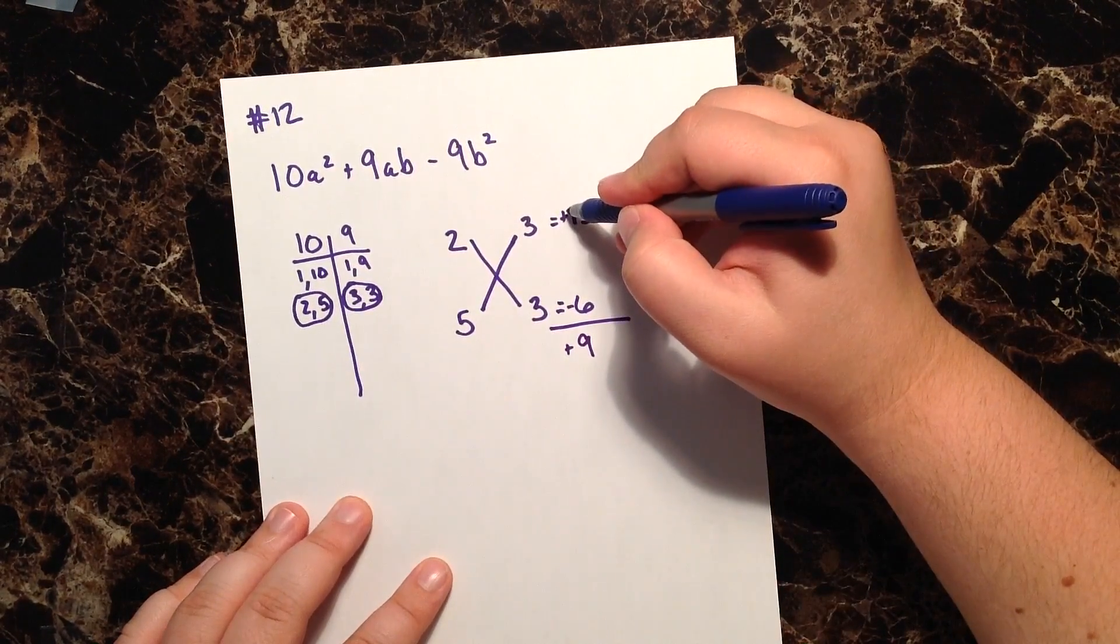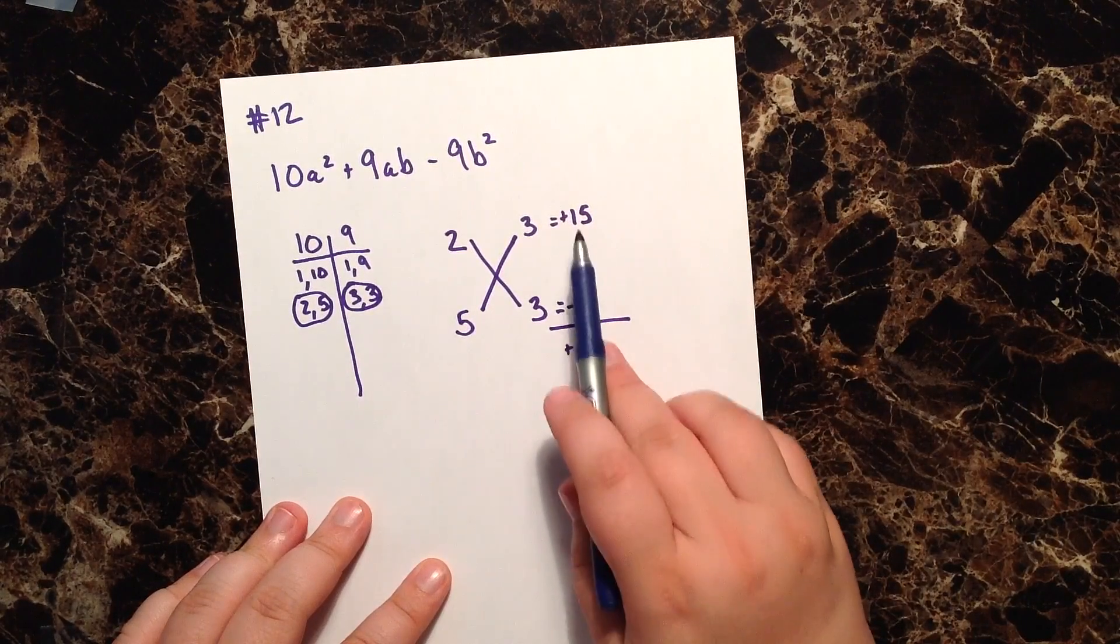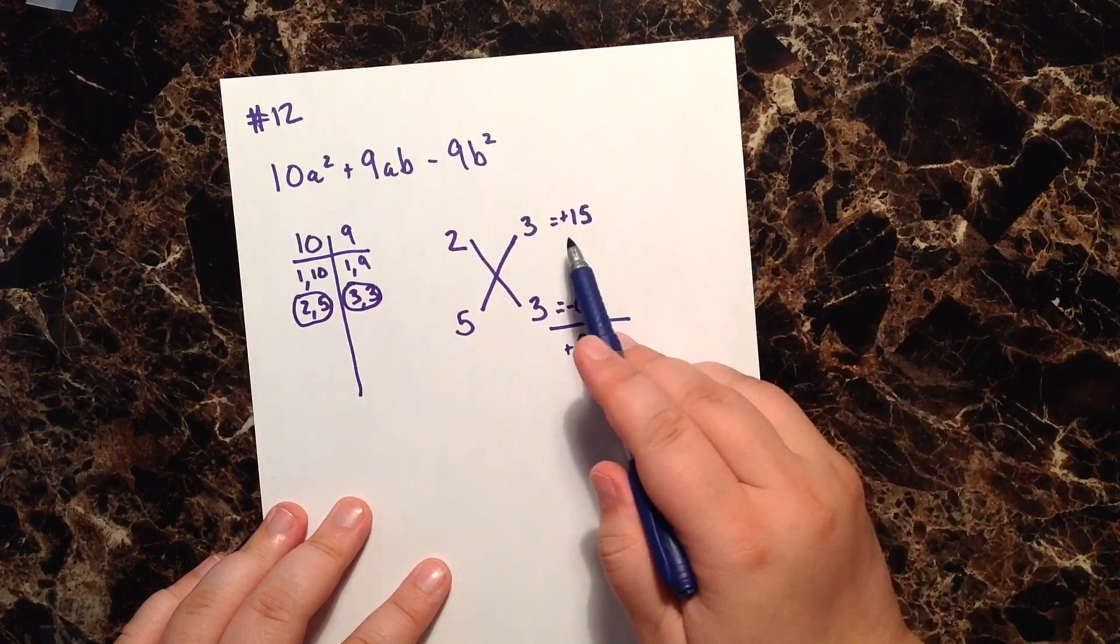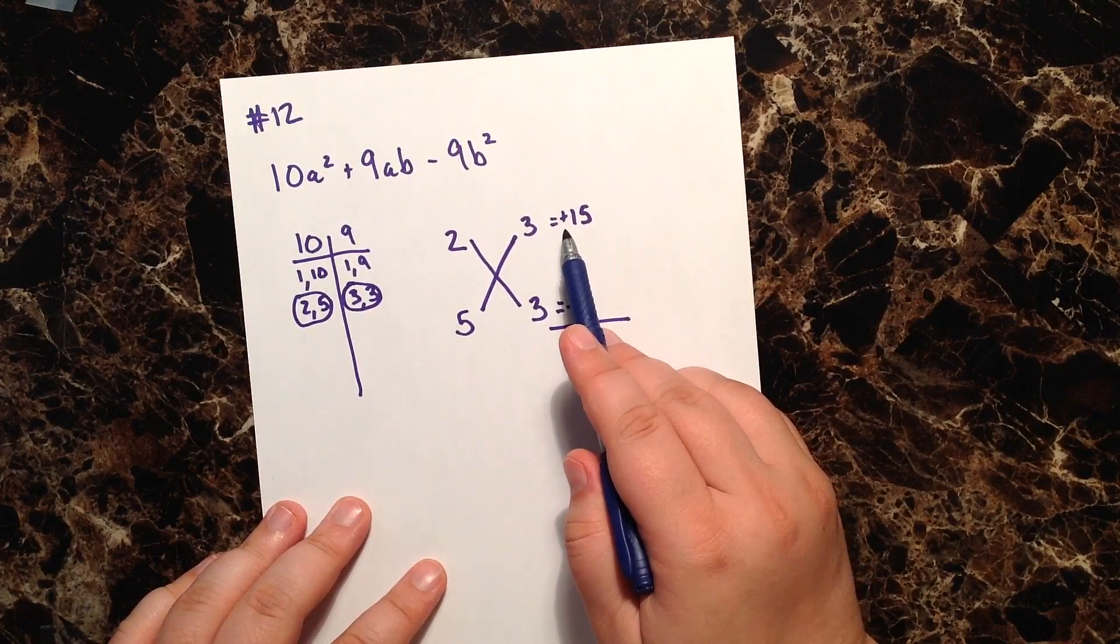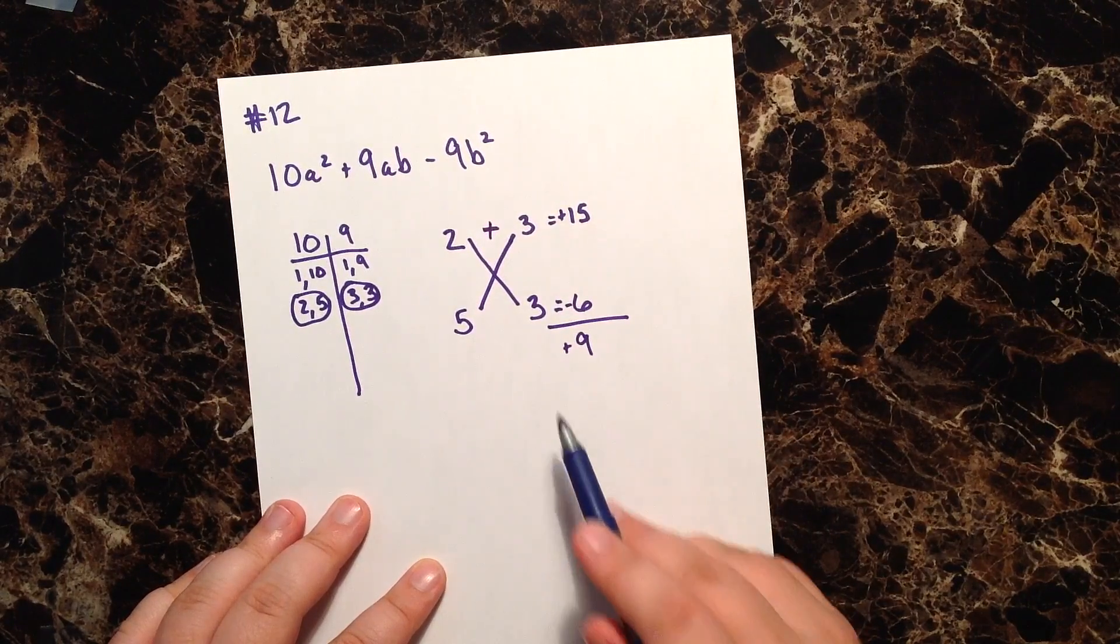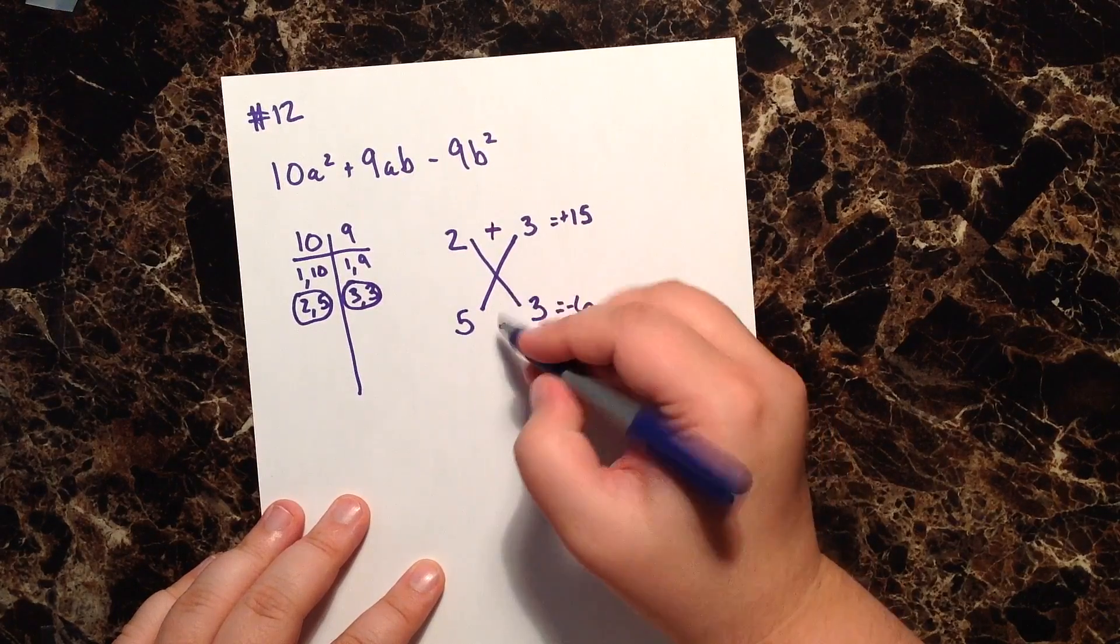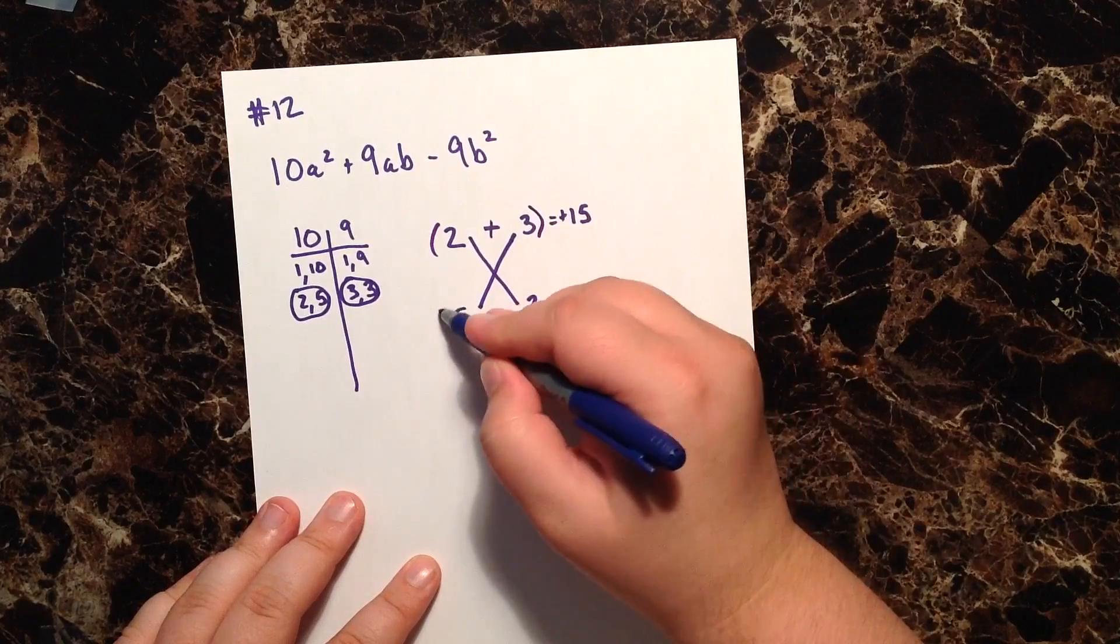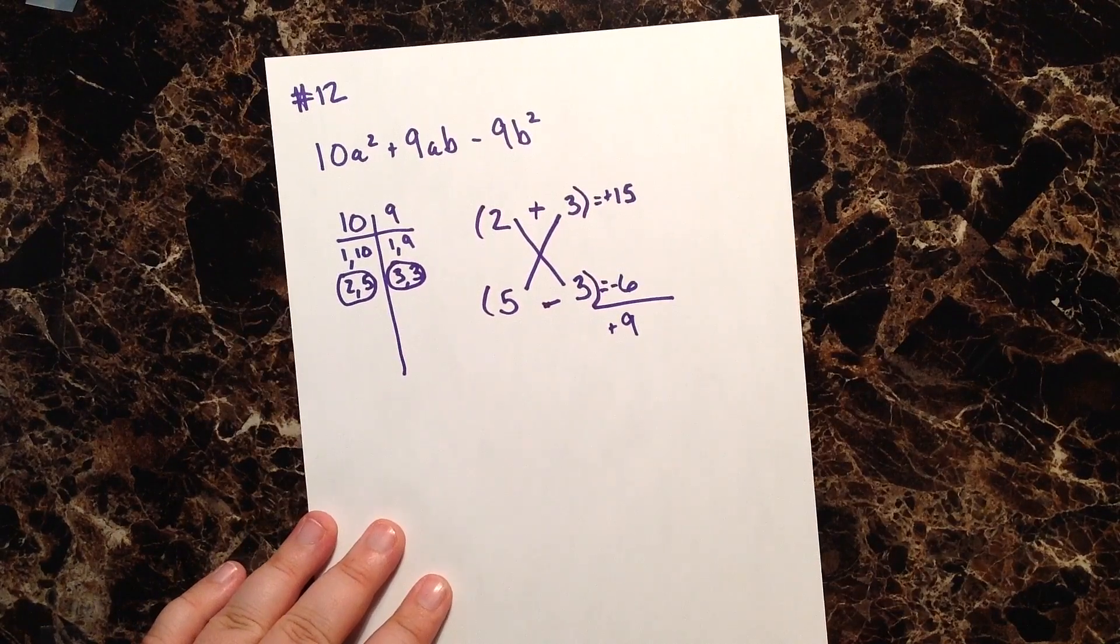And whatever sign we assign to the actual multiplication, the product here on the outside, that sign just moves over to the left. So in this case, the plus just moves right over, and the subtraction sign just moves right over. And let's go ahead and put parentheses around these, and then that becomes our factors.